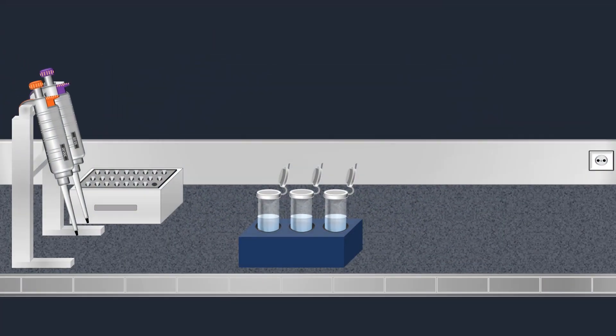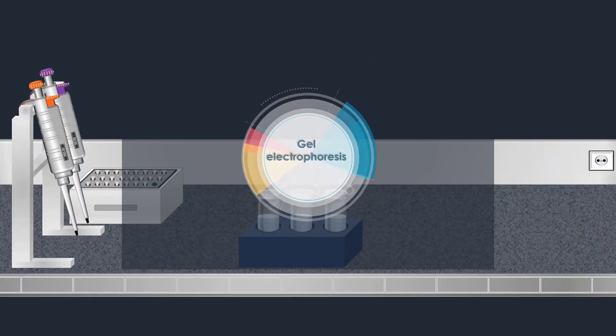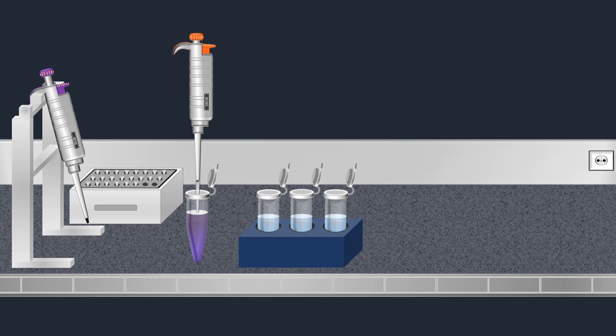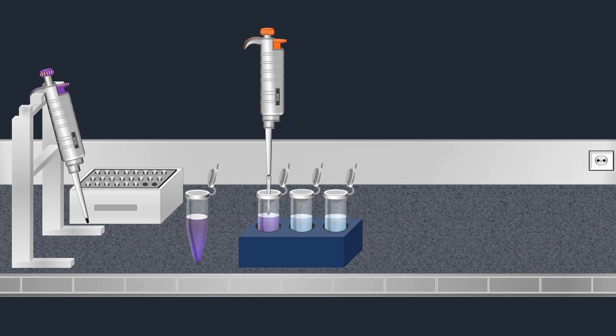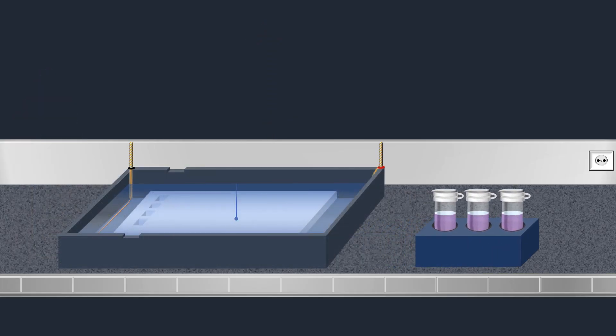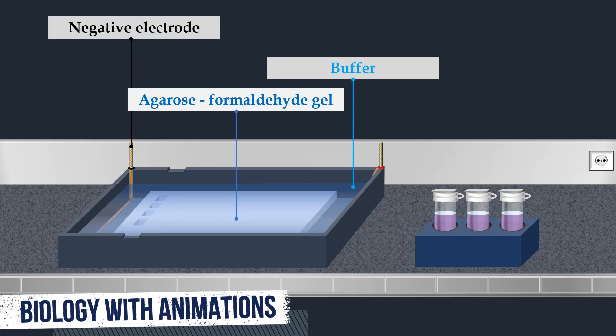After preparation of the samples, the RNAs are separated by gel electrophoresis. For the separation, a loading buffer is added to the samples and used as a tracking dye which migrates in the same direction as RNA, allowing the user to monitor the progress of the separation. Agarose formaldehyde gel electrophoresis is most commonly used to separate mixtures of RNA molecules.